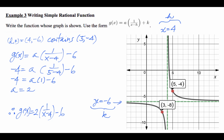Therefore, g(x) = 2 · (1/(x − 4)) − 6. There's a quick shortcut: from the new intersection of asymptotes, go right 1, then count how many units up or down you must go to reach the curve — that count is the value of a. Going up 2 means a = 2; going down would mean a is negative. But this isn't always easy to read precisely, so use the algebraic method as your primary approach.